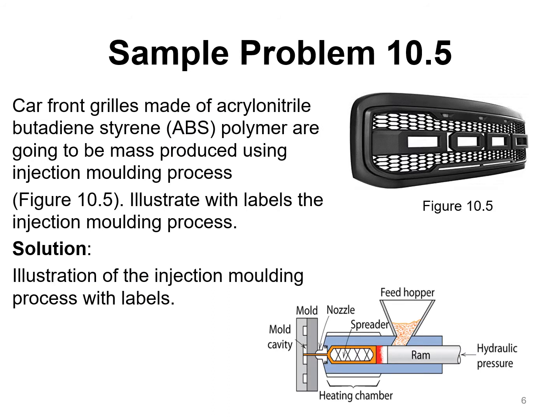A sample problem: coil front coils made of acrylonitrile butadiene styrene (ABS) polymer are best produced using injection molding as given in figure 10.5. You are asked to illustrate with labels the injection molding process. To answer, you can use a similar diagram as shown previously. In a final exam, you should also discuss in point form how ABS polymer can be produced using the injection molding process, referring to the e-textbook and other sources.